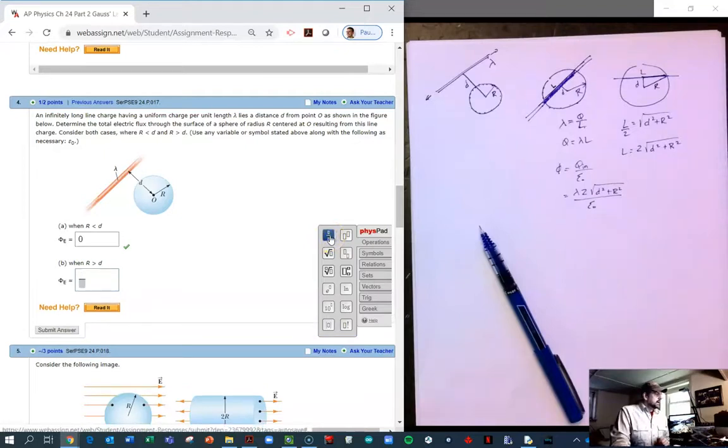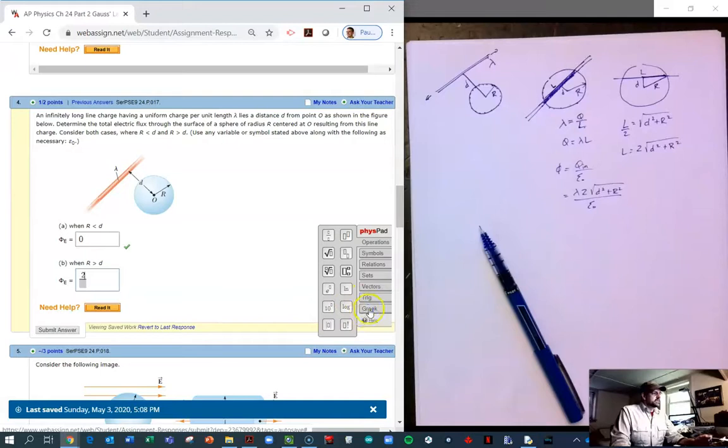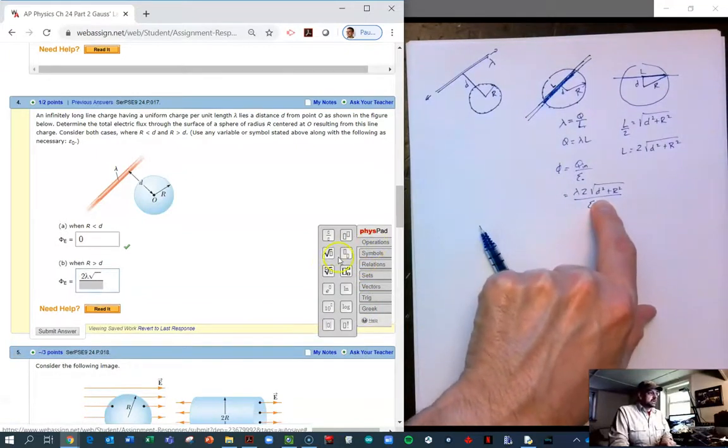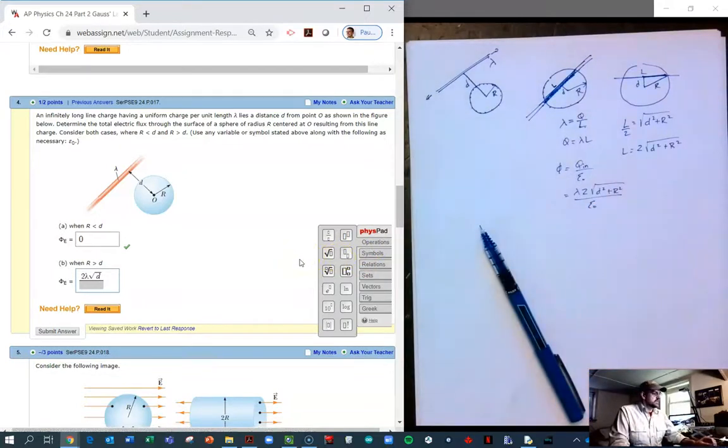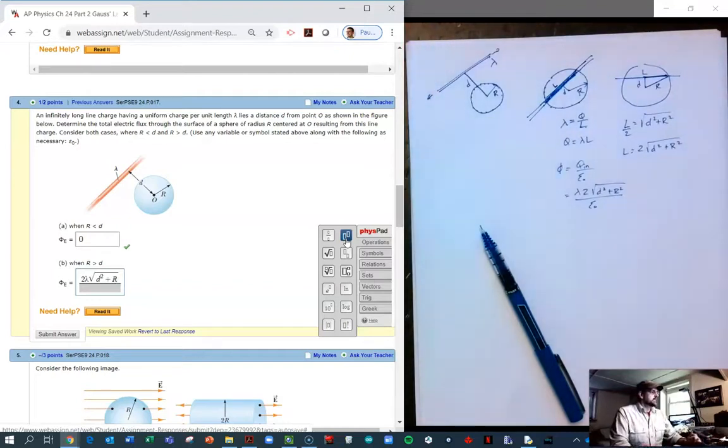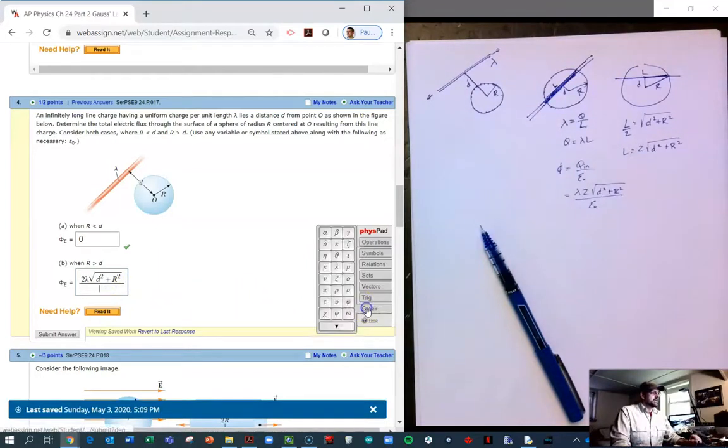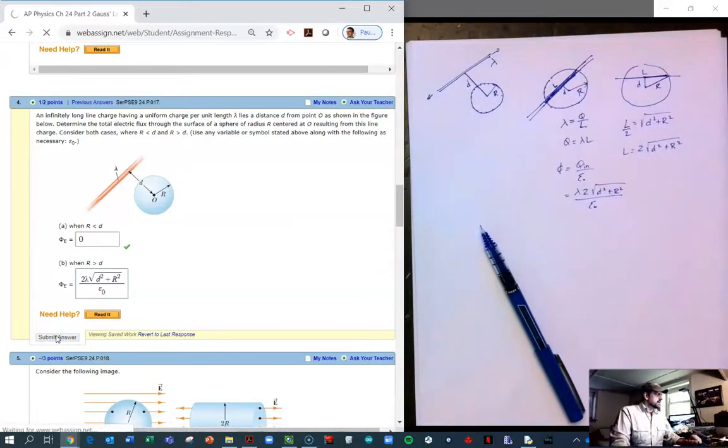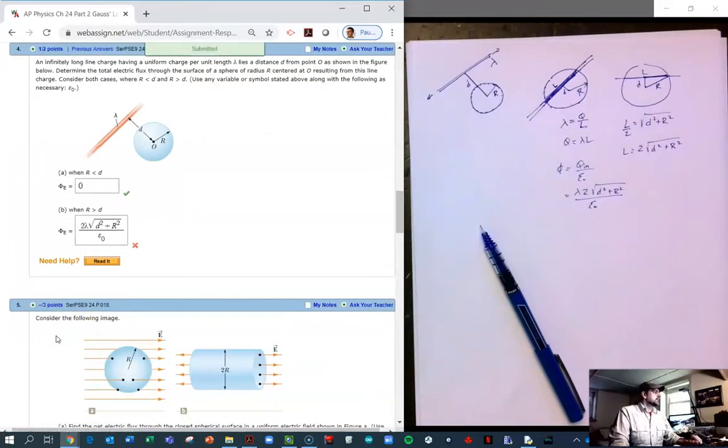We start off with a fraction. And then I'm just going to write my numerator first. We need a Greek letter lambda. Okay, we're going to then need the square root. So go back to the operations, square root, and we're going to need a couple of squares in there. So we're going to have a D squared. And I'm going to use my arrow key to move out. And then plus, and then this has got to be a big R. And we have to square that guy. And then underneath needs to be epsilon naught. So we go over to Greek, epsilon, and then back to operations for our subscript. And the subscript is a zero. It's not an O. It's a zero. Let's see if we typed it in correctly. Oh, my goodness. What did we miss?